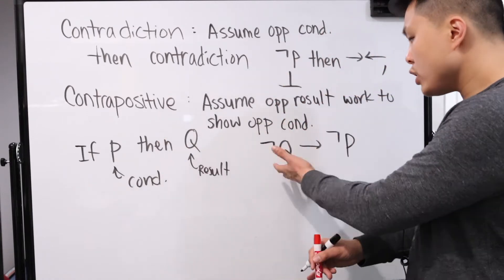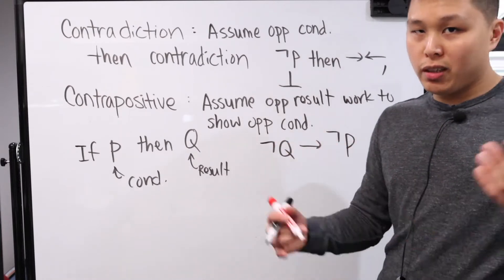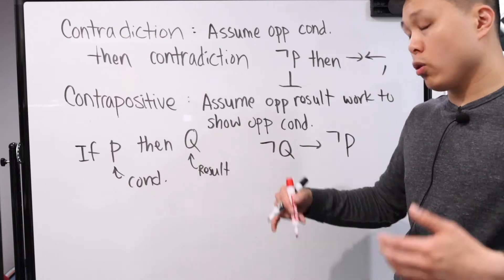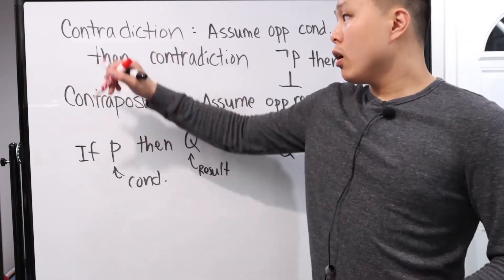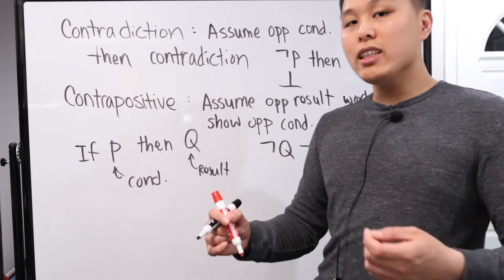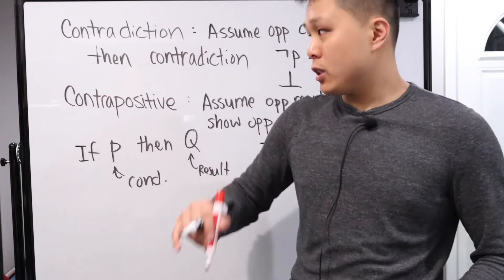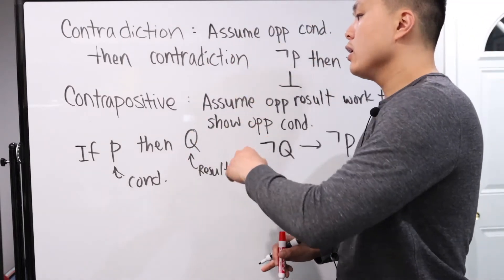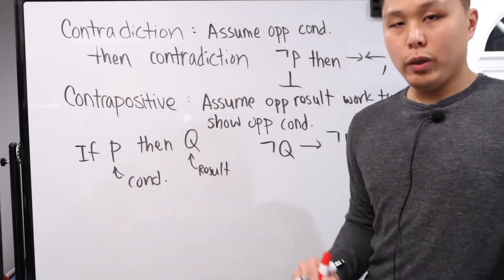Contrapositive is just switching the conditions and results around and negating them, then going through what is essentially an indirect proof. Both contradiction and contrapositive are what we call indirect proof methods — we don't go directly step one, step two, step three; we use logical reasoning to indirectly prove the result we want.